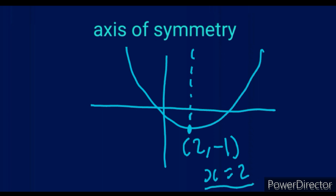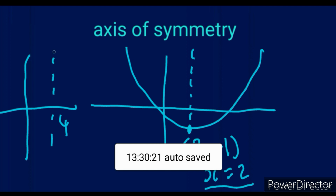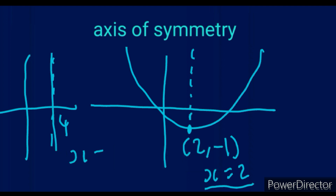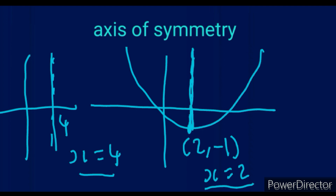Whenever we name a vertical line, we always say x equals something. For instance, if a line is at 4, it is called x equals 4 because for every y-value, x is always 4 — x does not change. So no matter where you go on that line, your x-value is always constant. That is why we say x equals 2 when naming a vertical line.